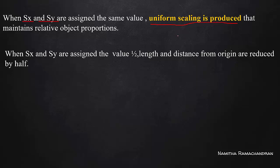Uniform scaling means the scaling factor is the same along both axes. For example, Sx equal to 1 and Sy equal to 1, or Sx equal to 2 and Sy equal to 2, or Sx equal to half and Sy equal to half. When both are equal to half, that is a size reduction.